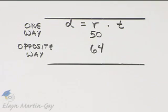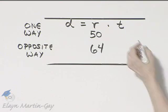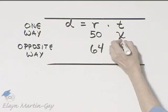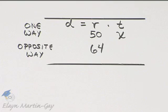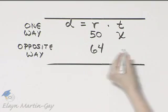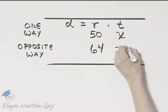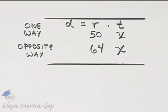Now, what are we looking for in this application? We're looking for how long it will take before they are 285 miles apart, so we are looking for a time. If I let X be this train's time, they are traveling the same amount of time, so the other train would be X also.